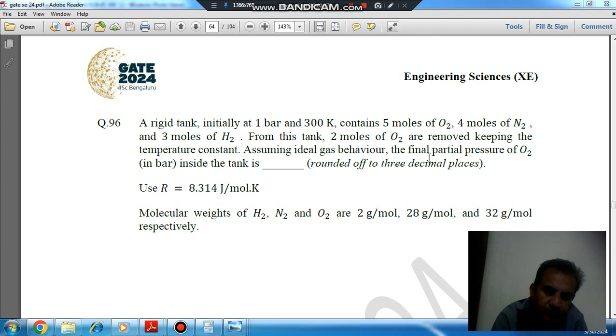Assuming ideal gas behavior, the final partial pressure of O2 in bar inside the tank is blank, rounded up to 3 decimal places. Use R equals 8.314 Joule per mole per Kelvin.